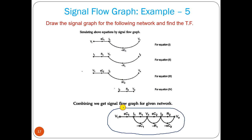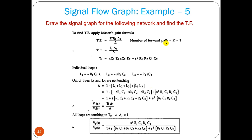The overall combined signal flow graph is: V_i → I1 (gain sC1), I1 → V1 (gain R1), V1 → I2 (gain sC2), I2 → V0 (gain R2), with feedback V1 → I1 (gain −sC1), V0 → I2 (gain −sC2). This is the complete signal flow graph of this network.